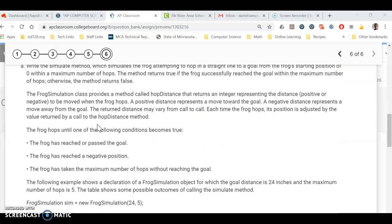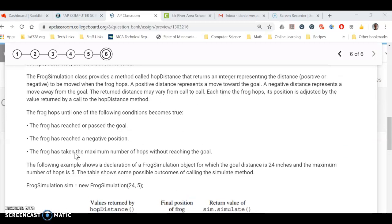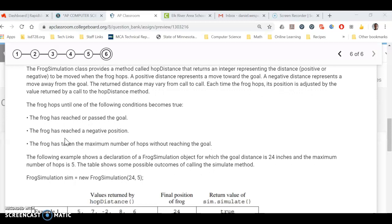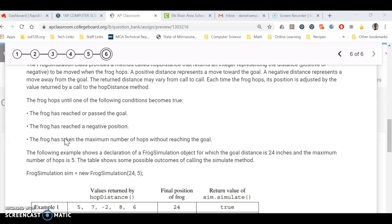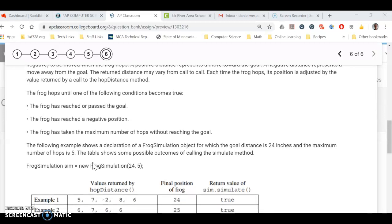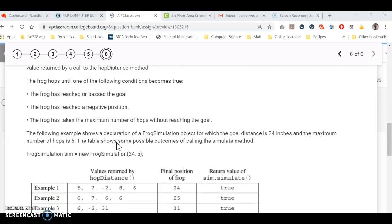They give some pretty good examples here. If the frog reaches the goal or passes it, then we return true. If the frog goes to a negative position, then we're going to return false. We didn't make it. And then if you reach your max hops and you still haven't reached your goal, then you want to return false.